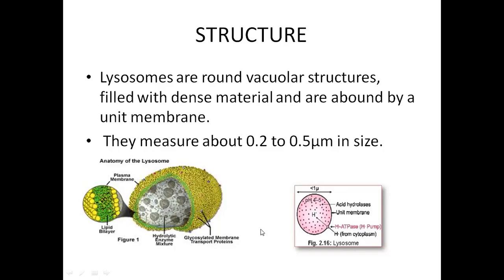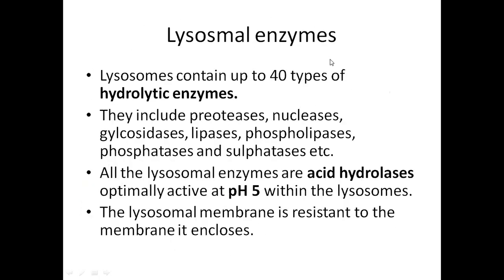The lysosomal enzymes present in the lumen are hydrolytic in nature. These include proteases, nucleases, glycosidases, lipases, phospholipases, phosphatases, and sulfatases. All these hydrolytic enzymes together are termed hydrolases. Since they function at an optimum pH of 5, they are specifically termed acid hydrolases.